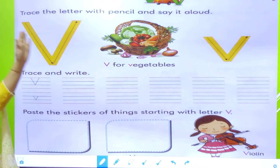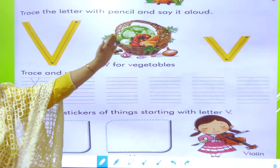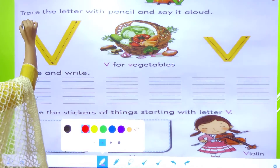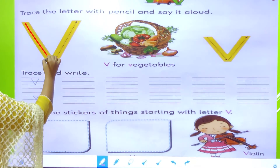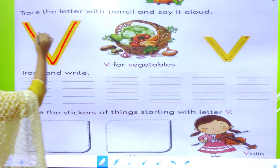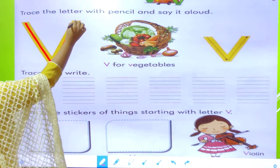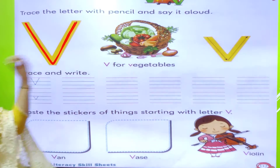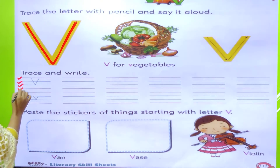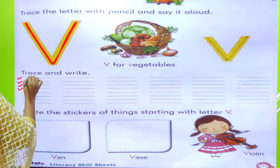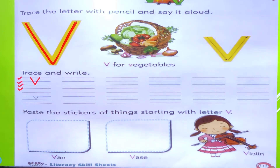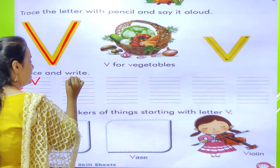Here we all can see letter V. So what we have to do here — trace the letter with pencil and say it aloud. First, we all can see here capital letter V. So first we will trace capital letter V: slanting line, one more slanting line. We will start from the red line, go down till the second blue line, and then another slanting line up. This is capital letter V.